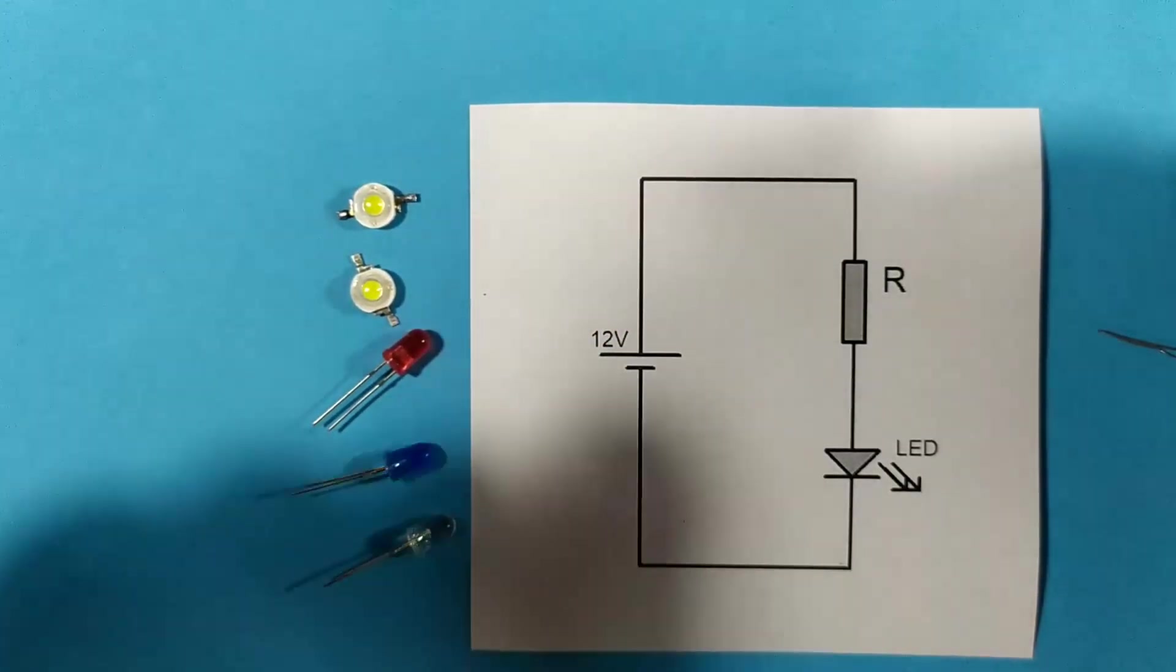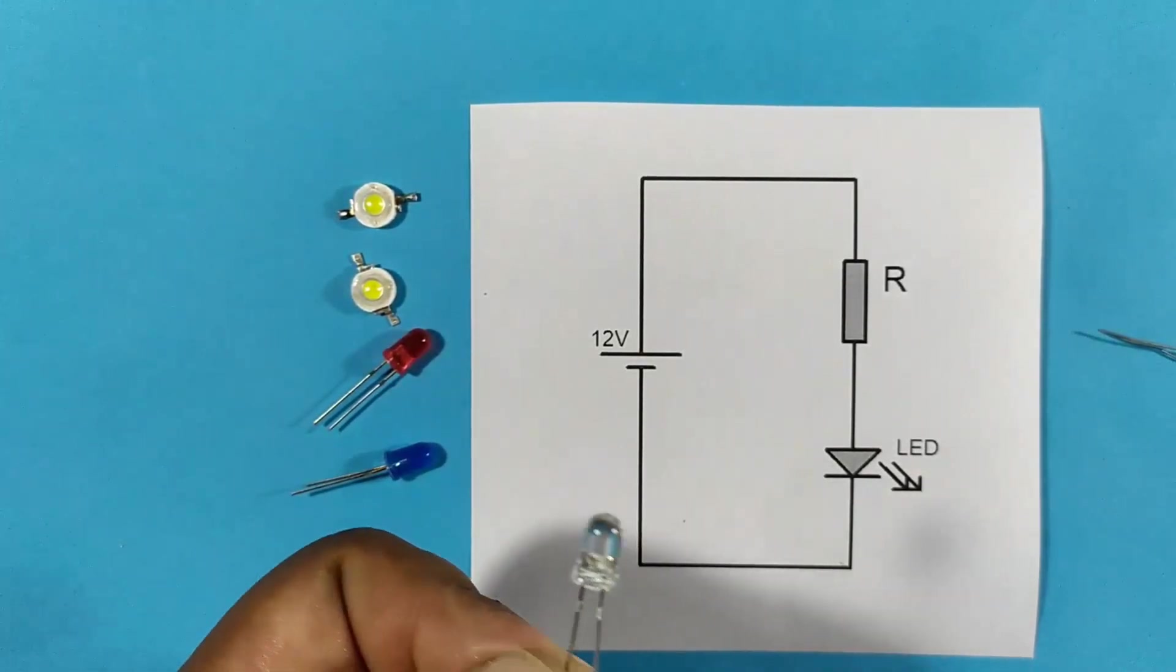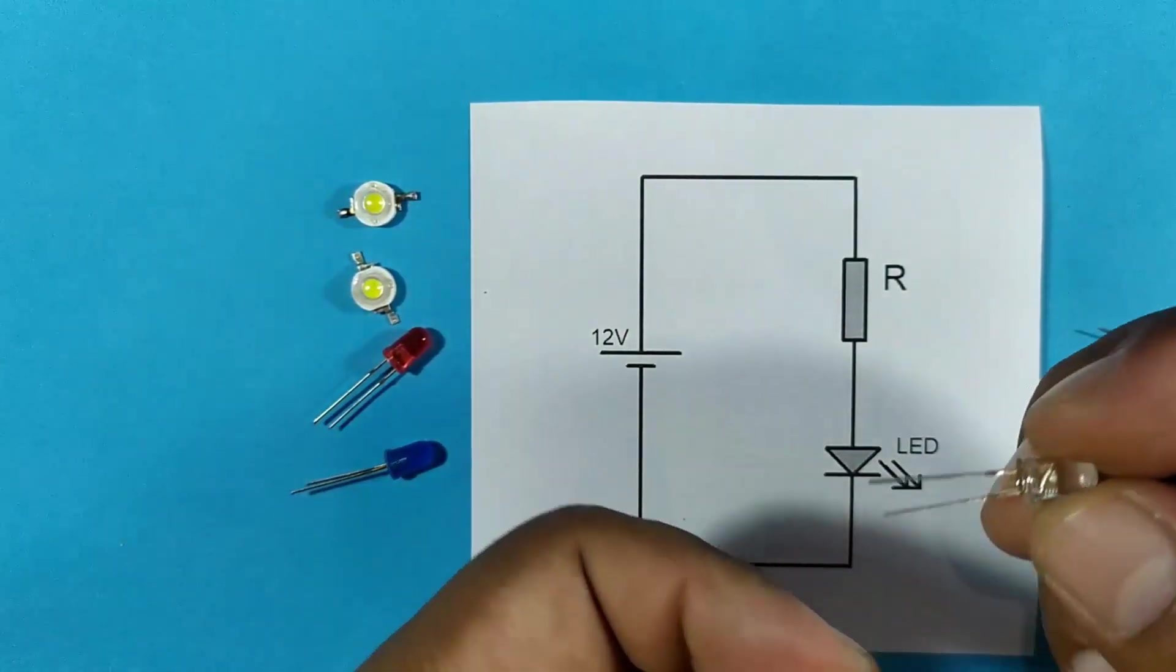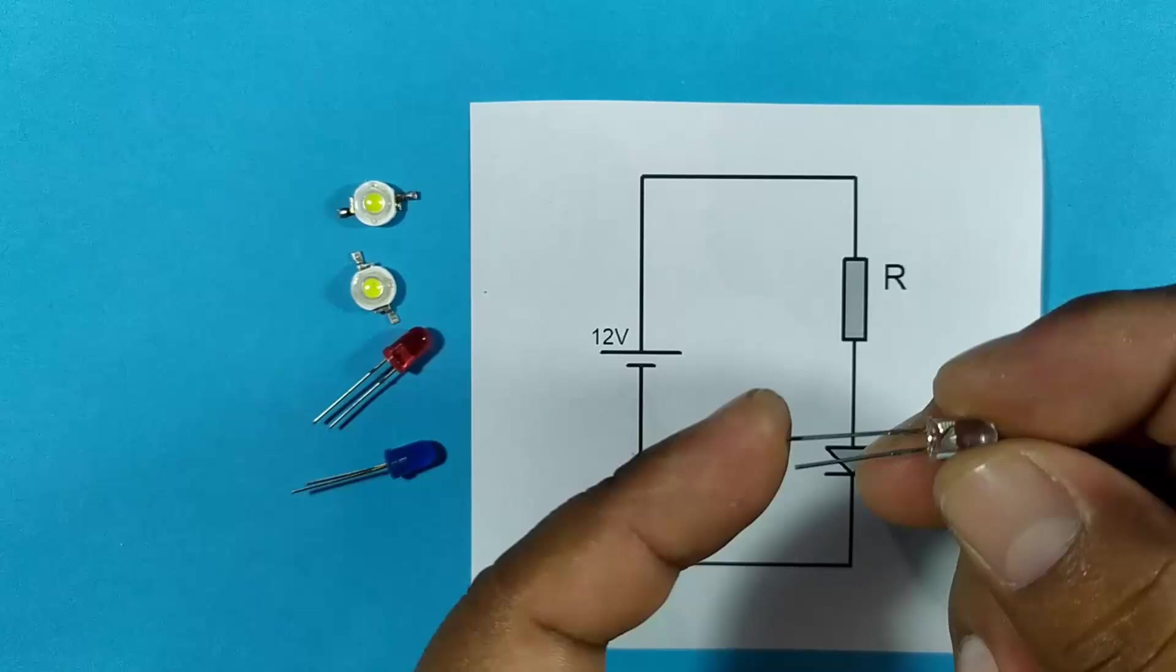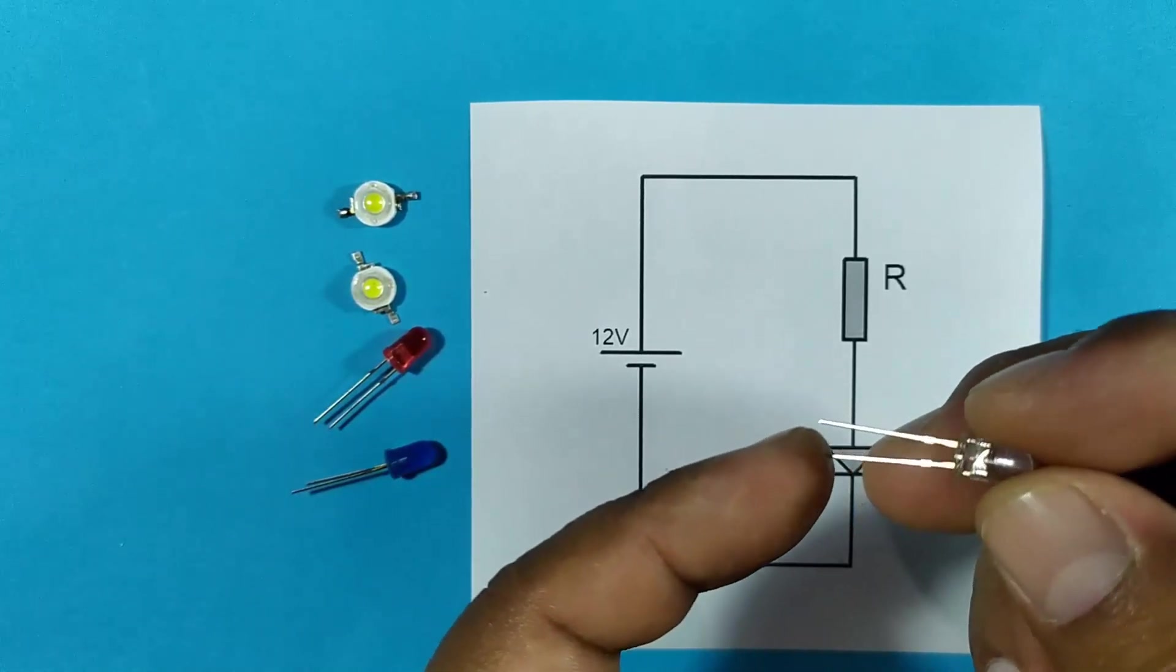Before calculating the resistance value, you must first know that LED diodes have polarity. They have a longer pin, which is positive, and a shorter pin, which is negative.